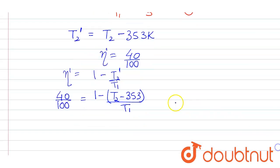So on rearranging here, canceling zero with zero, we get T2 minus 353 upon T1 equals 3 by 5. Now shifting here, T2 upon T1 minus 353 upon T1 equals 3 by 5.